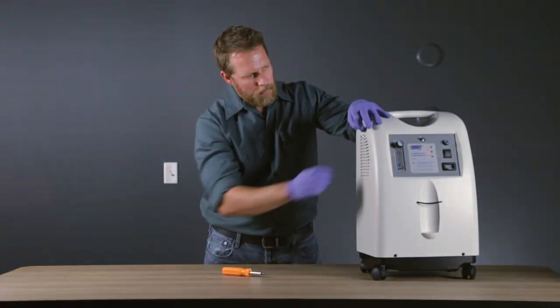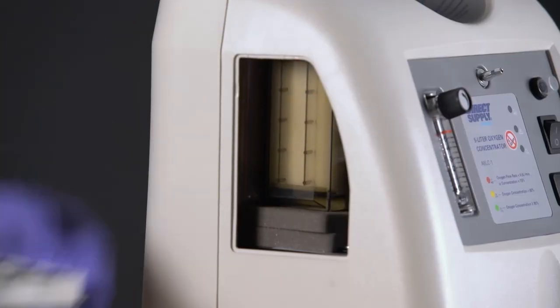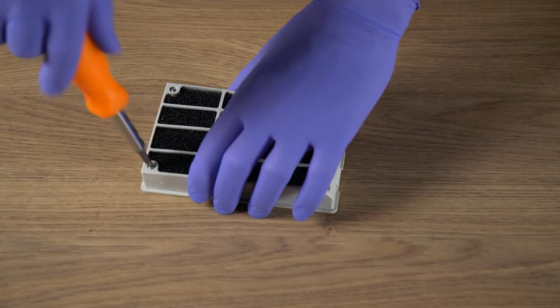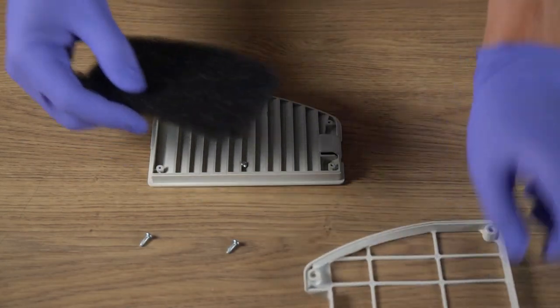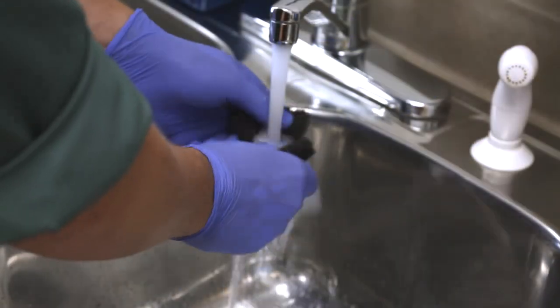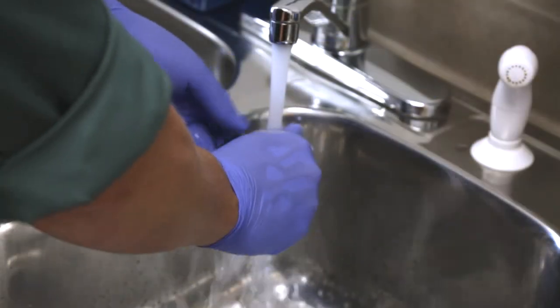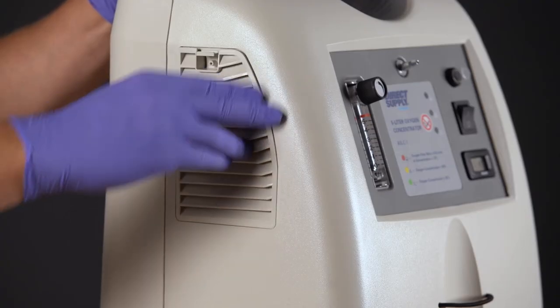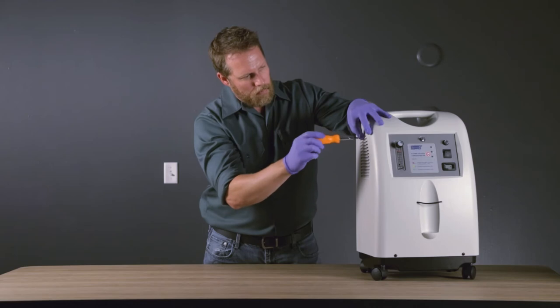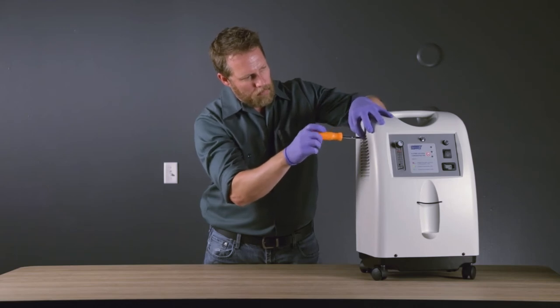Remove the locking screw and the access door on the left side of the concentrator. Unscrew the filter retention frame, and remove the cabinet filter from the door. Wash the cabinet filter with water, and completely air dry before reassembling and returning to service. Reassemble the filter retention frame and door, then place the door back on the cabinet. Reinsert the access door locking screw.